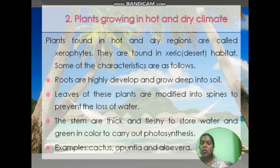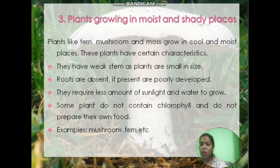The stems are thick and fleshy to store water and are green in color to carry out photosynthesis. Examples include cactus, Opuntia, and aloe vera. Similarly, plants growing in moist and shady places — such as ferns and mushrooms — grow in cool and moist places.